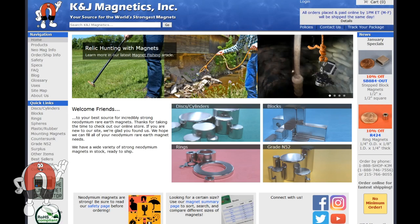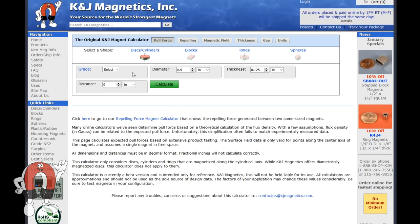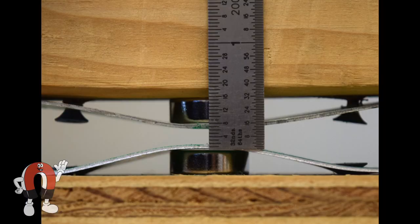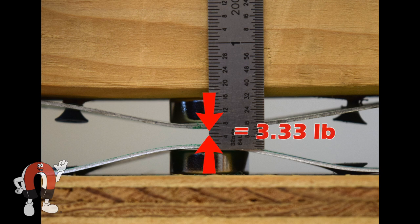We can plug these numbers into our K&J pull force calculator to estimate the magnet to magnet pull force. Our calculator says the magnet to magnet pull force is around 3.3 pounds. This is the force between the two magnets attracting face-to-face. This means it would also take 3.3 pounds of force to pull the magnets straight apart.